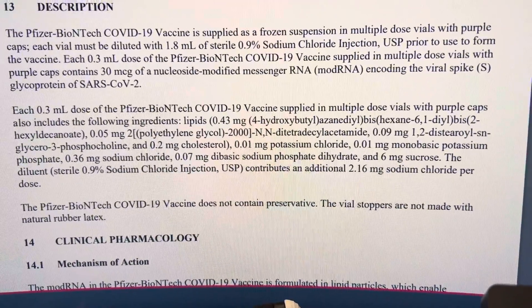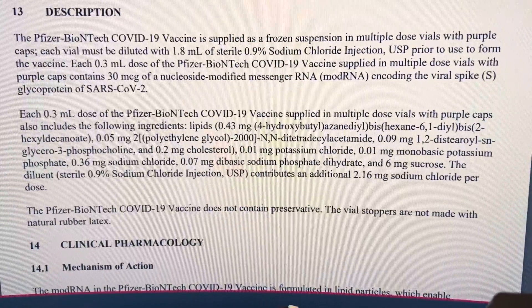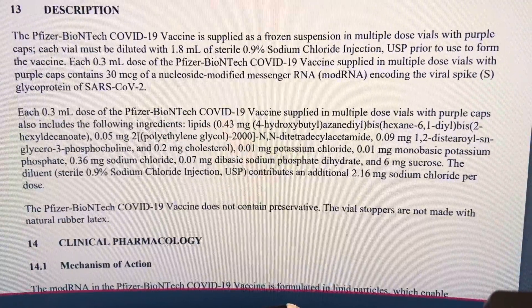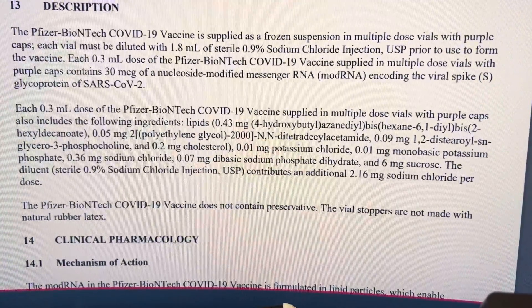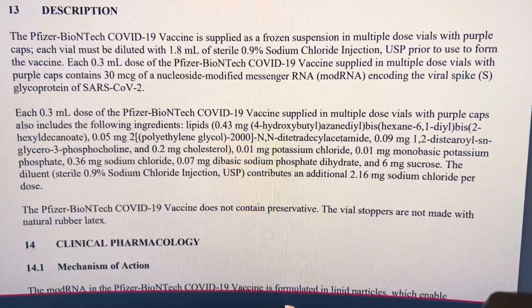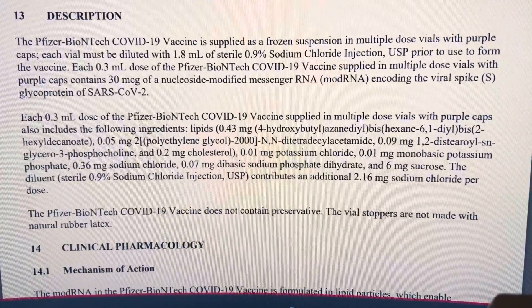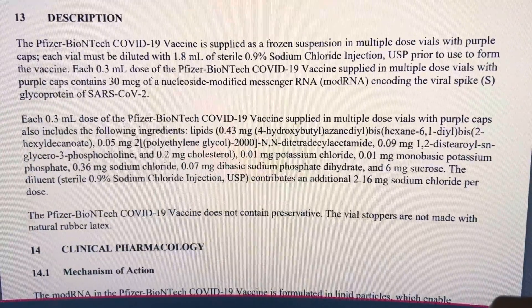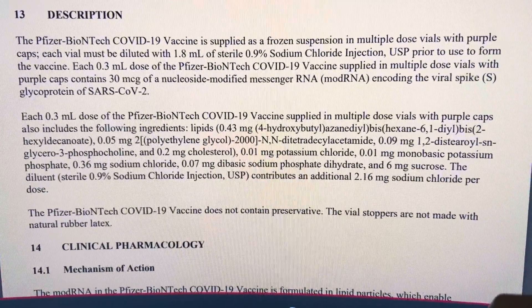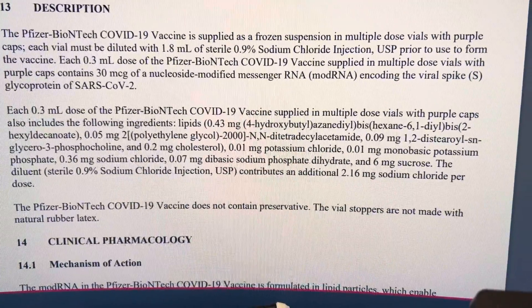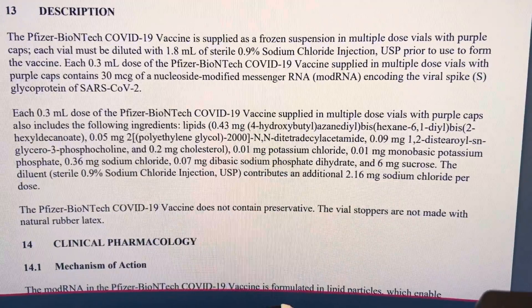The list is going from highest to lowest by milligrams. You have potassium chloride at 0.01 milligrams, then 0.01 milligrams of monobasic potassium phosphate, and 0.3 milligrams of sodium chloride — that one jumped up a bit. Then 0.07 milligrams of dibasic sodium phosphate dihydrate.